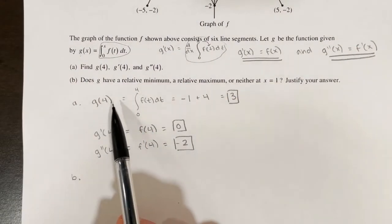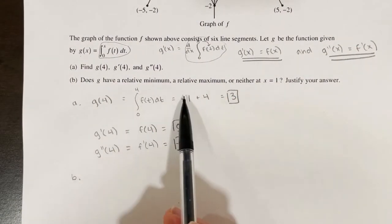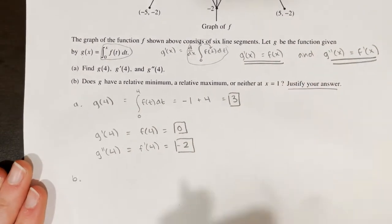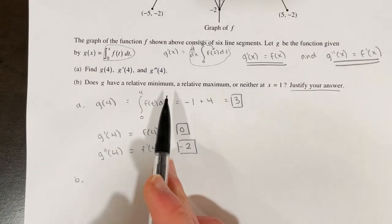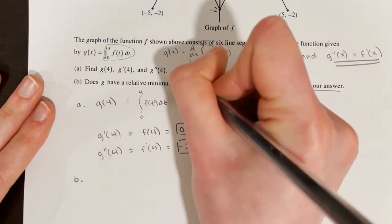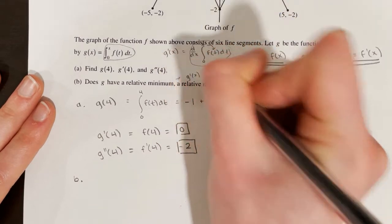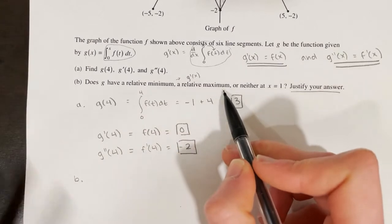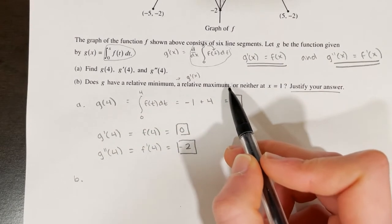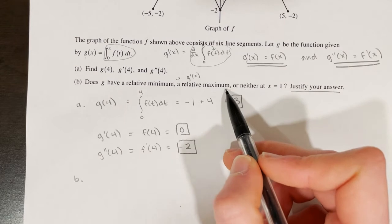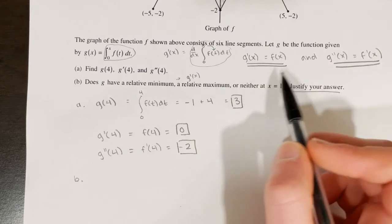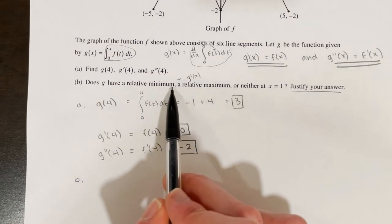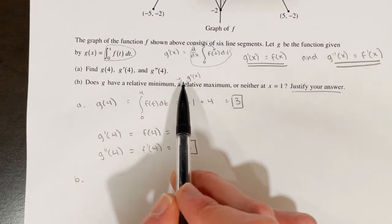Part B asks whether g has a relative minimum, a relative maximum, or neither at x equals 1, and we must justify. For g to have a relative minimum, g prime of x would be changing from negative to positive. For a relative maximum, g prime changes from positive to negative. Since g prime of x equals f of x, we look at whether f changes from negative to positive at x equals 1.